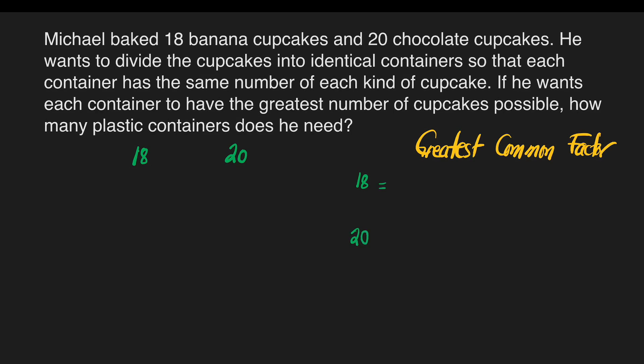So, what are the factors of 18? They are 1, 2, 3, 6, 9, and 18. Why can we not write 4? Because 18 divided by 4 will not give you a whole number. So that's why 4 is not a factor of 18.